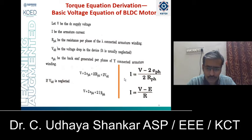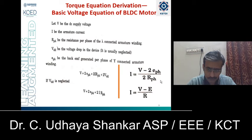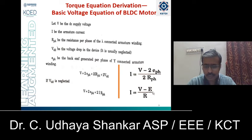From this voltage equation, we can find the expression for current I. Rearranging the terms, I will be equal to (V − 2·E_phase) / (2·R_phase). This expression is similar to the conventional DC machine expression, that is I = (V − E) / R.